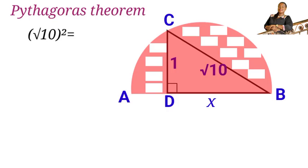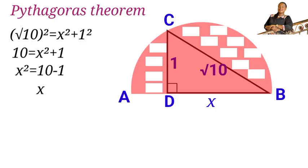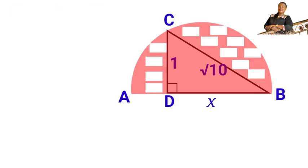This would be the square root of 10 squared equals X squared plus 1 squared. That would be 10 equals X squared plus 1. X squared would be equals to 9. So when you take the square root of both sides, we have X equals to 3. So DB is 3.